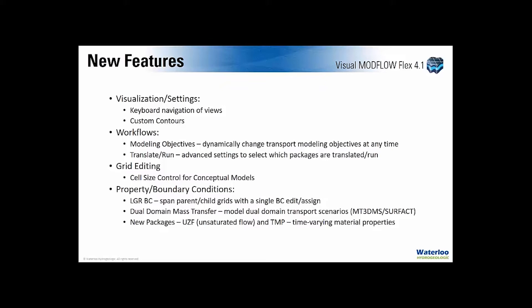In terms of property and boundary conditions, when you digitize features for LGR they can now span the parent and child grids in a single assigned step. New with this version, MT3D-MS and Surfact have dual domain mass transfer available as a modeling objective. We've also introduced the unsaturated zone flow package (UZF), which provides one-dimensional vertical flow through the unsaturated zone and is available with ModFlow 2005 and NWT models. Also new is the TMP (time varying material properties) package, associated with Surfact.